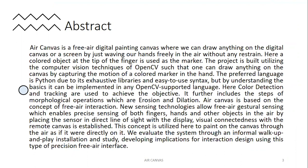AIR Canvas is a free AIR digital painting canvas where we can draw anything on the digital canvas, or simply a screen, by just waving our hands freely in the air without any restraint. Here, a colored object or a stylus at the tip of the finger is used as the marker. The project is based on utilizing the computer vision techniques of OpenCV, such that one can draw anything on the canvas just by capturing the motion of the stylus in the hand. The preferred language is Python due to its exhaustive libraries and it is an OpenCV-supported language.